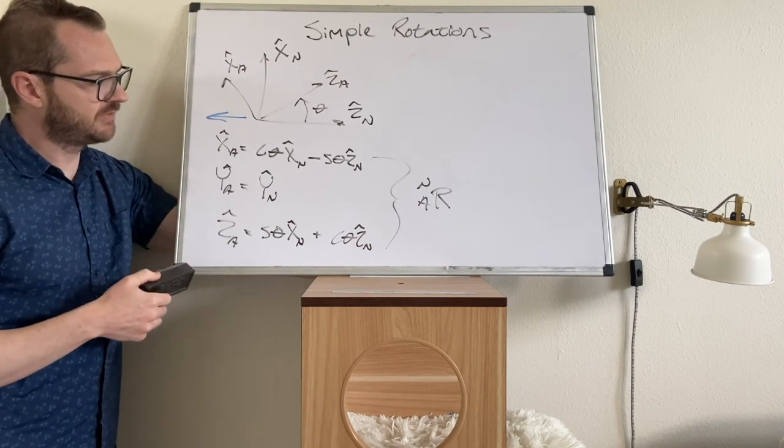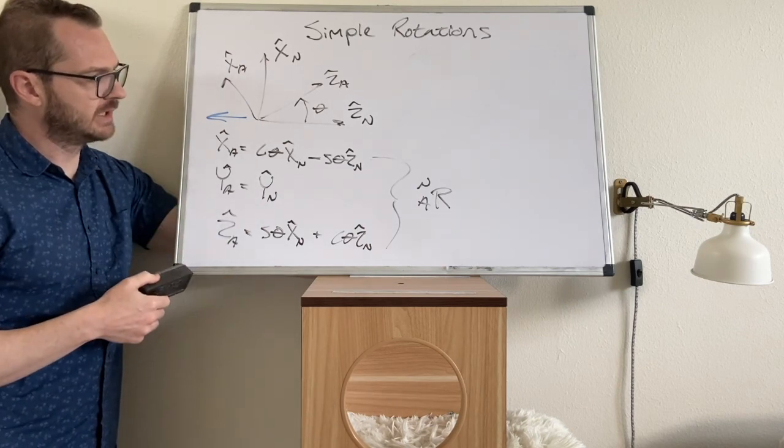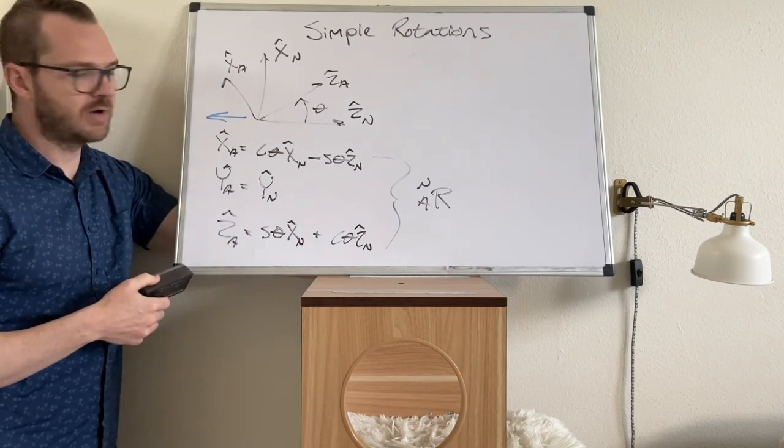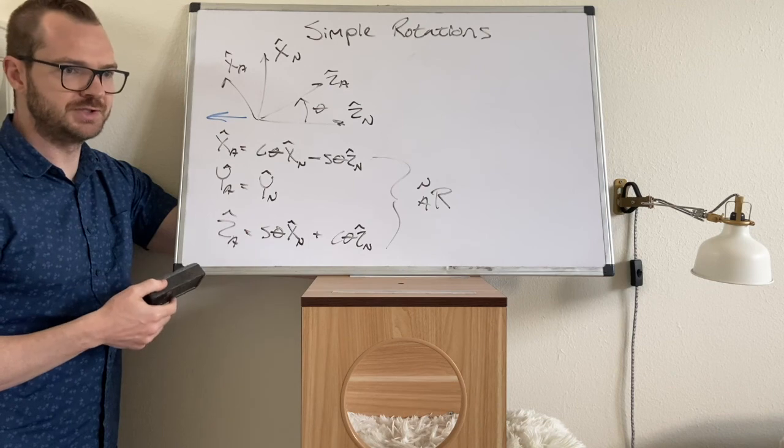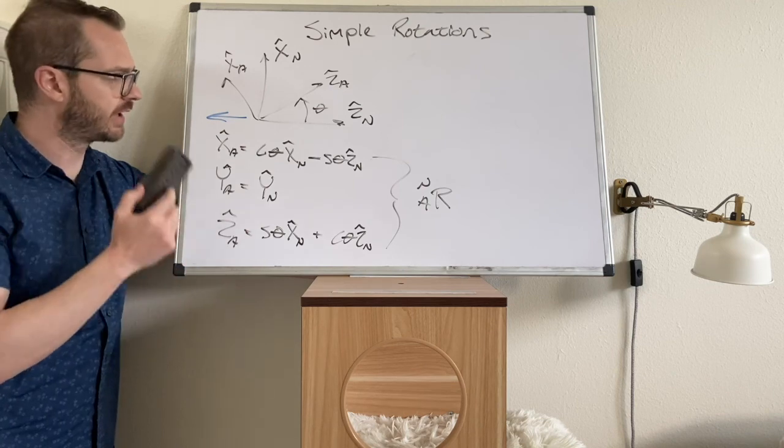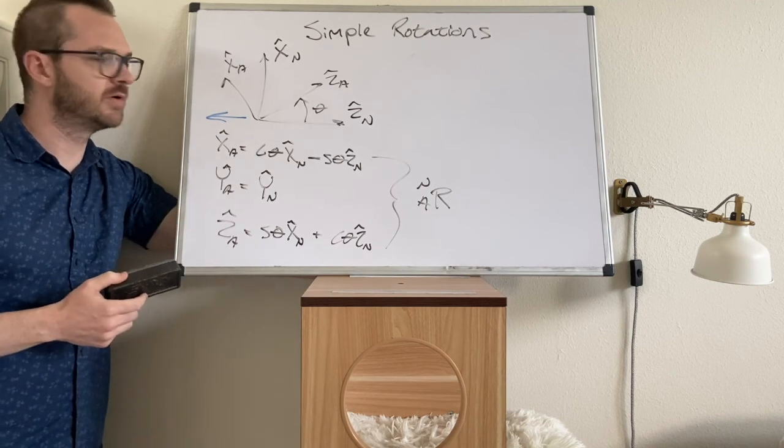So you've already got the shared z in your notes, we just did shared x, and here's the form for shared y. These are the three simple rotations. It doesn't matter the geometry — if you do a simple rotation, it is one of these three forms, every time, as long as you're using right-handed coordinate frames.